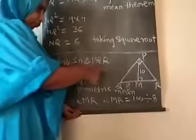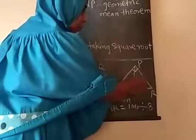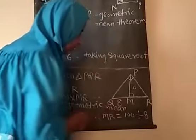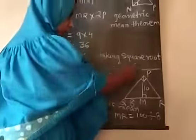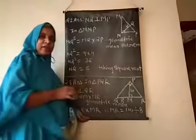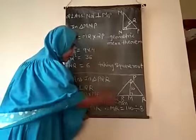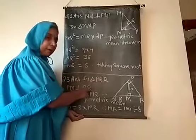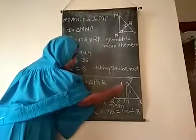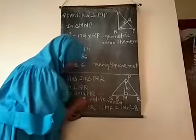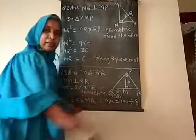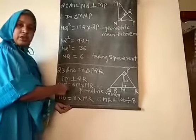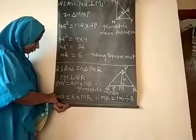In question number 3, triangle PQR is a right-angle triangle where PM is perpendicular to the hypotenuse QR. Since a perpendicular is drawn on the hypotenuse, we again use the geometric mean theorem: PM squared equals QM multiplied by MR.